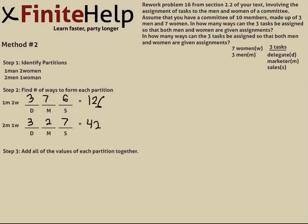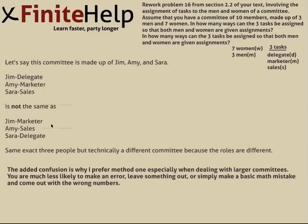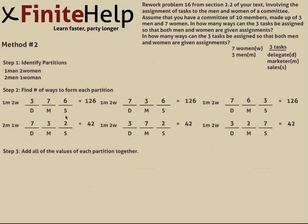I want to show you just a really specific example of why that is. Let's say we have a committee of Jim, Amy, and Sarah. We have Jim as delegate, Amy as marketer, Sarah as salesperson. That's not the same committee as the same three people with Jim as marketer, Amy sales, Sarah delegate. Same exact three people, but technically a different committee because the roles are different. The added confusion here is why I prefer method one, especially when you're dealing with larger committees. You are less likely to make an error or leave something out. Now that should be pretty clear to you, we'll go back to method two and I'll show you how to do it the right way.